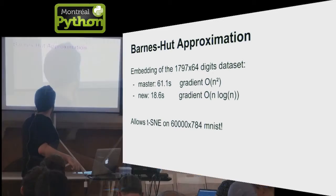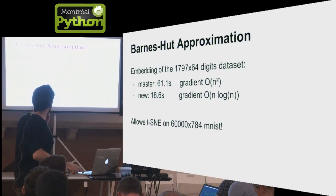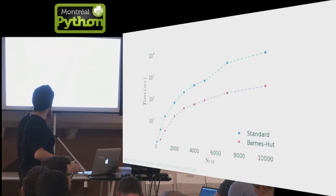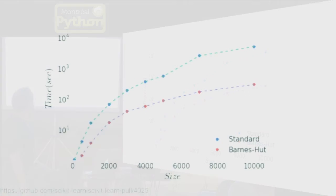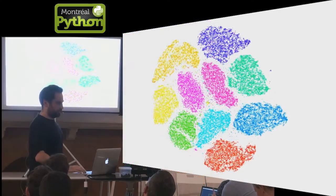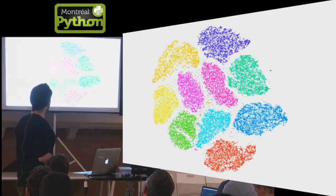It makes it possible to run it on MNIST quite easily. This is the scalability curve of the new implementation in red compared to the standard implementation that we already have in the last release. This is a logarithmic scale on the y-axis in seconds. You can see that it stays below a couple of minutes, whereas the other would move to the hours and days quite quickly.